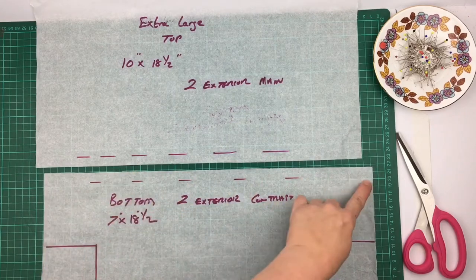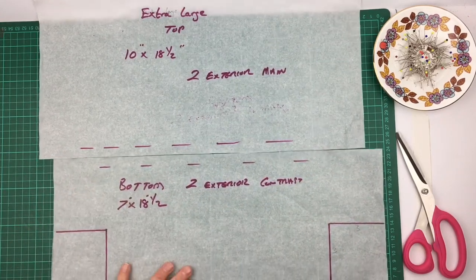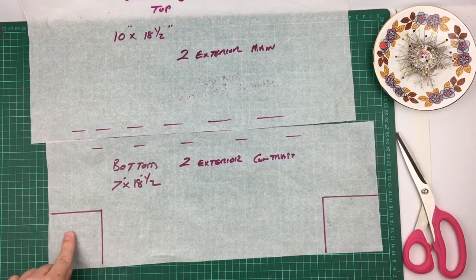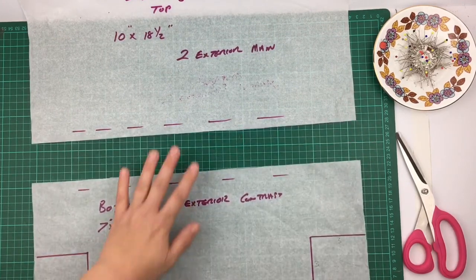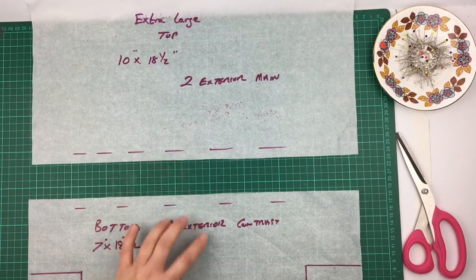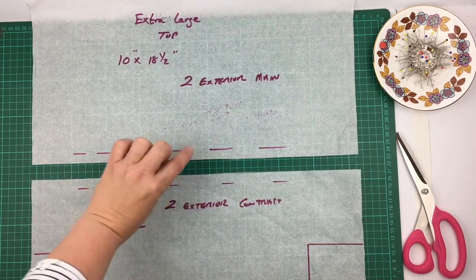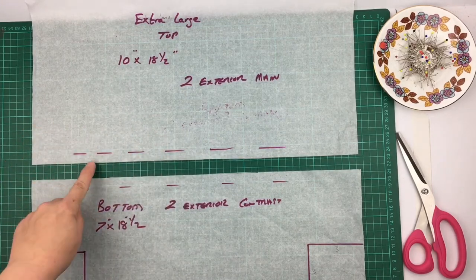I still use the same bottom of the bag where it's a three inch cutout. But instead of having a quarter inch seam allowance joining these two pieces of fabric, because we're going to fold over and topstitch, I've actually got half an inch seam allowance.